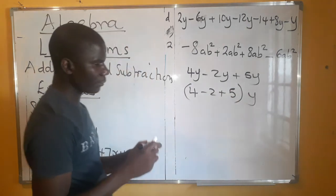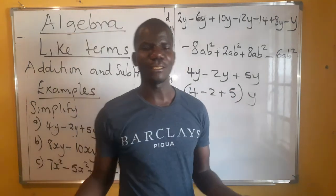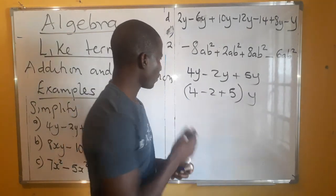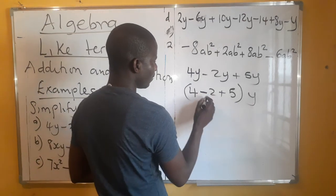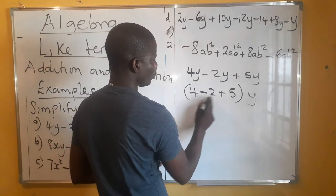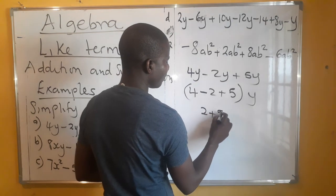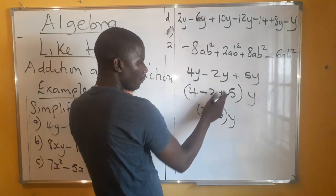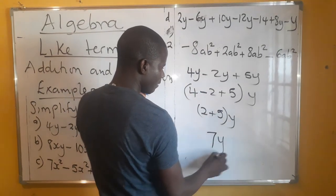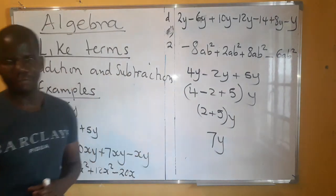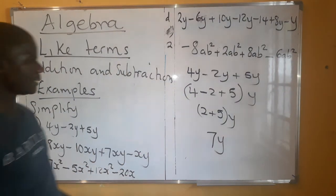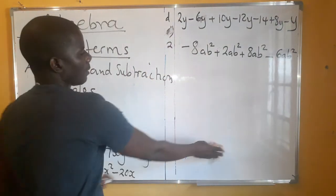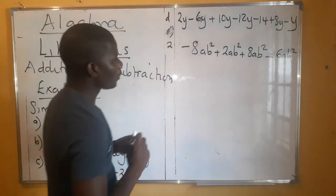I can factor out the y that is common outside so that we do not get distracted. What are we supposed to do here? When you simplify, 4 minus 2 gives you 2, plus 5 — you bring your y down. 4 minus 2 gives us 2, plus 5. When we add this we get 7y. So 7y is our answer for the first one.